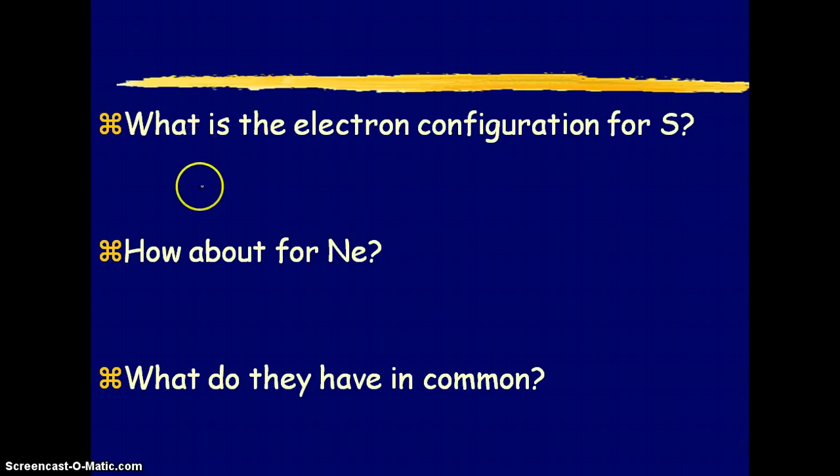So if you're looking at the periodic table, you know you start with the 1s, you have 1s2, 2s2, 2p6, 3s2, and then we see we stop at 3p4.